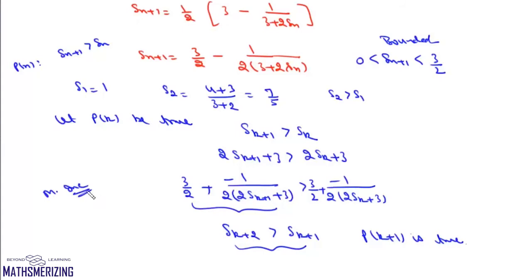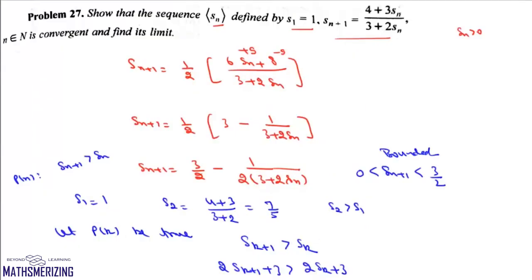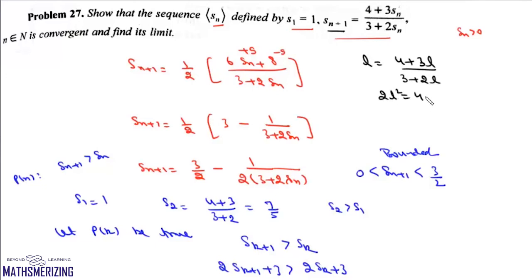Since the sequence is bounded and monotonically increasing, it is a convergent sequence. To find the limit, let the limit be L. Then L = (4 + 3L)/(3 + 2L), which gives 2L² = 4, so L = √2. The limit of the sequence is √2.